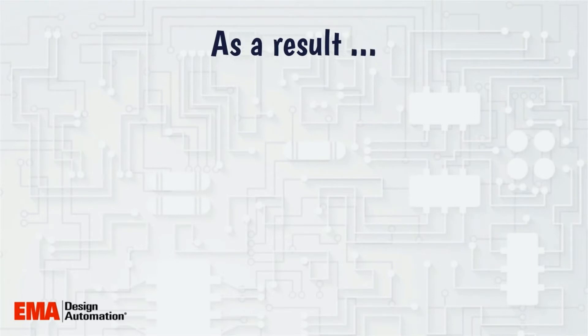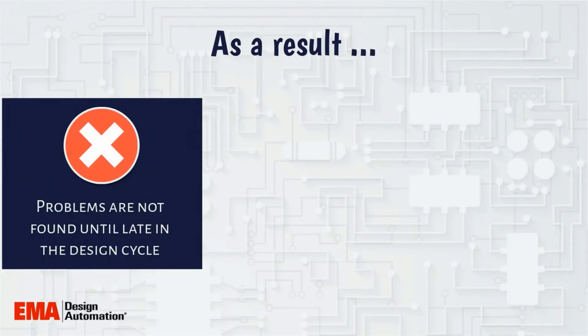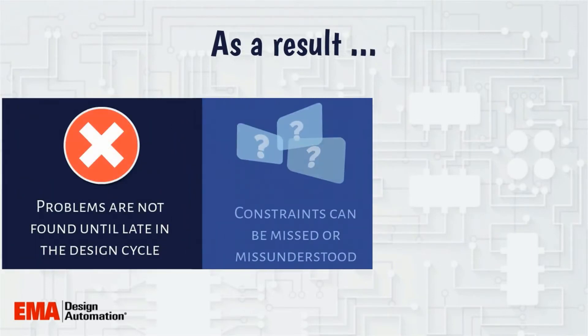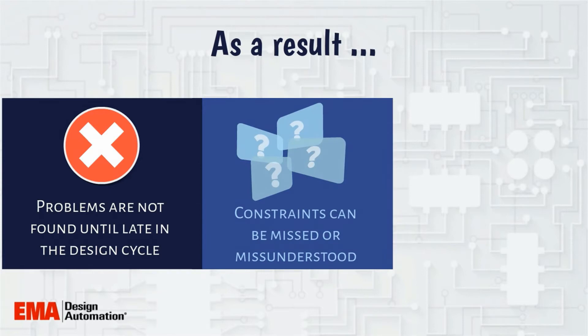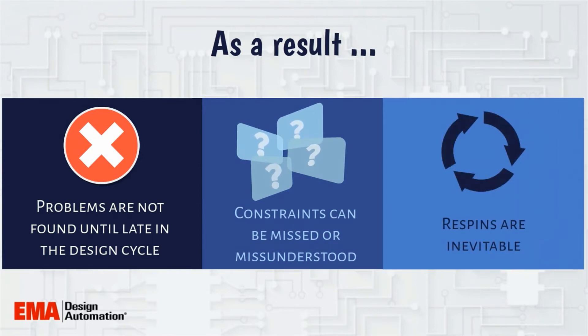As a result, problems are not found until late in the design cycle, constraints can be missed or misunderstood, and respins are all but inevitable.